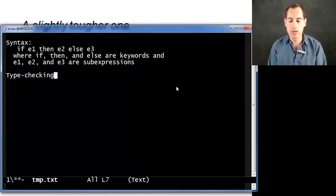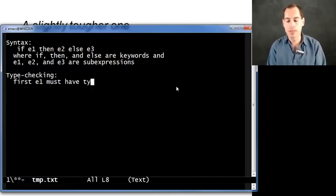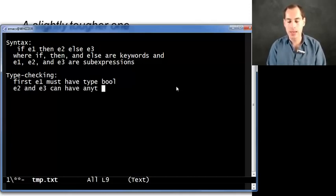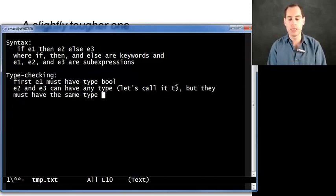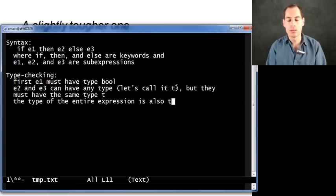Now, the type checking is more interesting and is different than with addition expressions. So first, E1 must have type bool. It must be true or false, or a variable type bool, or a comparison, or some expression of type bool. E2 and E3 can have any type. Let's call it T. But they must have the same type, T. So you can't have a then branch of one type and an else branch of another type because the result of our entire expression might be either of them. And what we need is the type of the entire expression is also T.